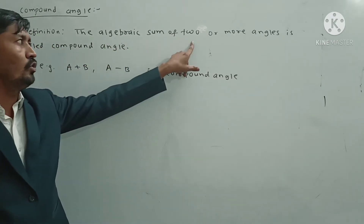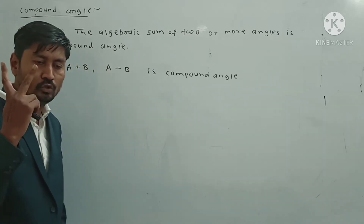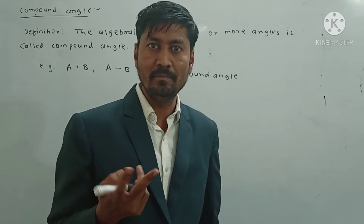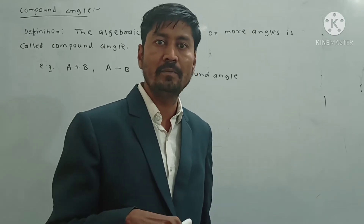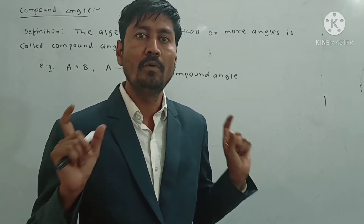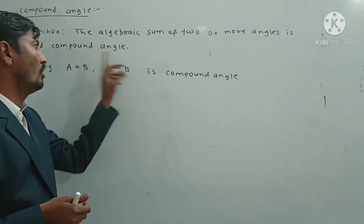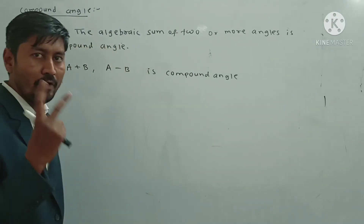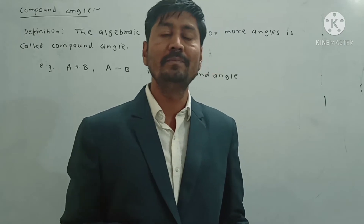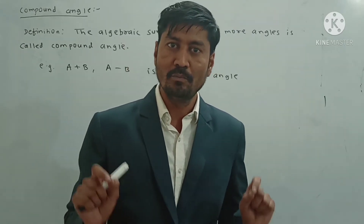The algebraic sum of two or more angles is called a compound angle. Suppose we have any two angles, A and B, then their addition A plus B and their subtraction A minus B is called a compound angle.